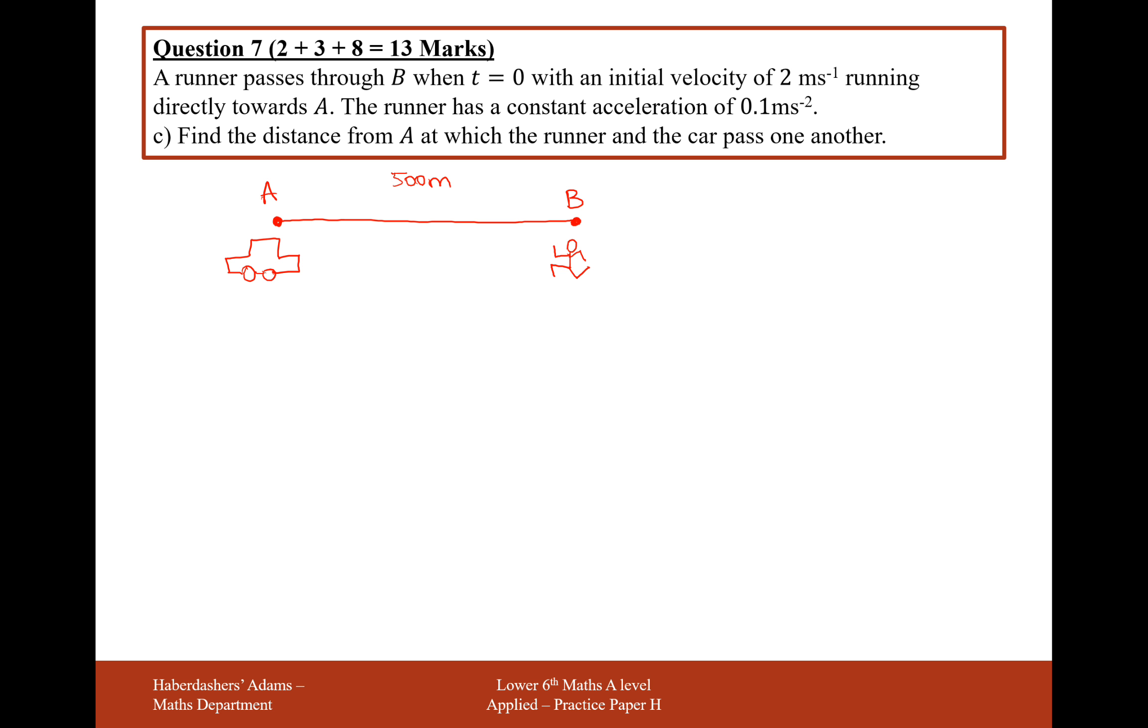We can form a SUVAT equation to work out the distance where they pass one another. We need some letters here, so we'll call the car P and we'll call the runner Q.